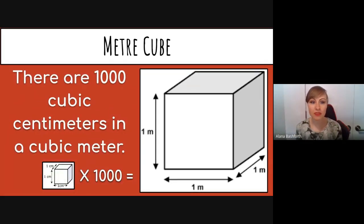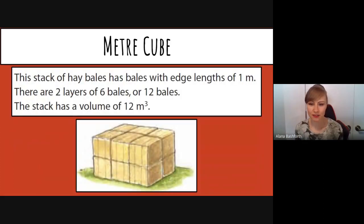There are 1000 cubic centimeters, those little colorful things, in one cubic meter. So you can put a thousand of those inside, layer upon layer. If you've ever seen a square hay bale, this stack of hay bales has bales with edge lengths of one meter. There are two layers of six bales, or 12 bales, so the stack has a volume of 12 meters cubed.